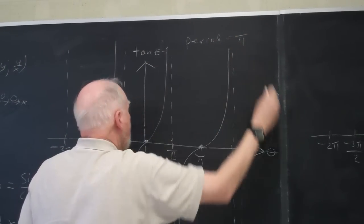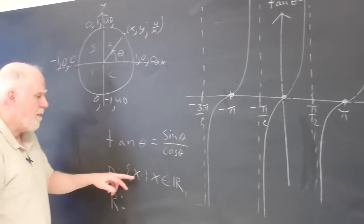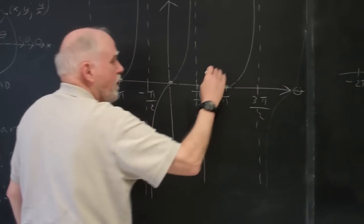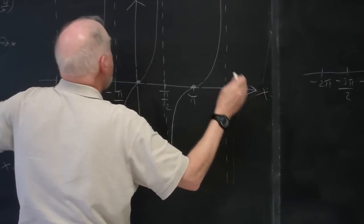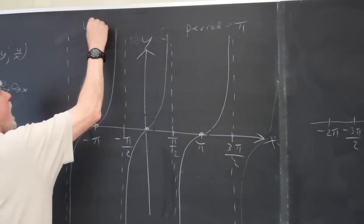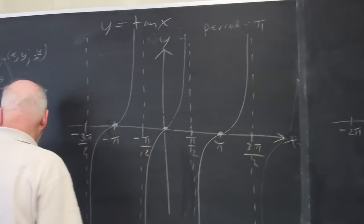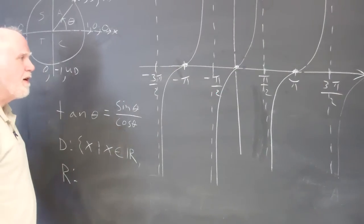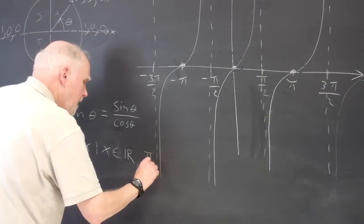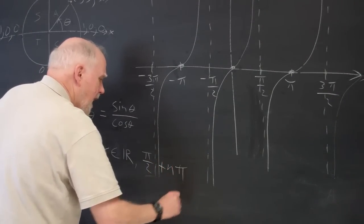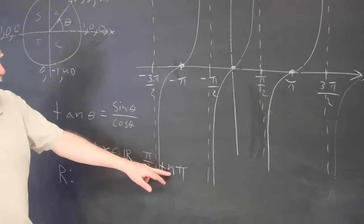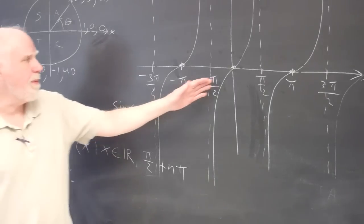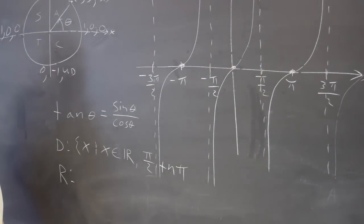Period equals pi units. Now I can talk about the domain — I'll change the variable to x and call the output y, so we're looking at y equals tangent of x. The domain is all real x's except x cannot equal pi over two plus n times pi, where n is an integer. Adding pi to pi over two repeats the vertical asymptotes every pi units.